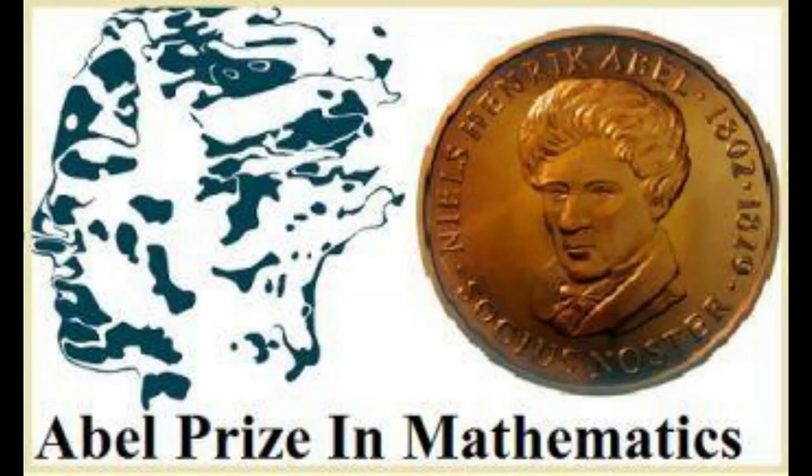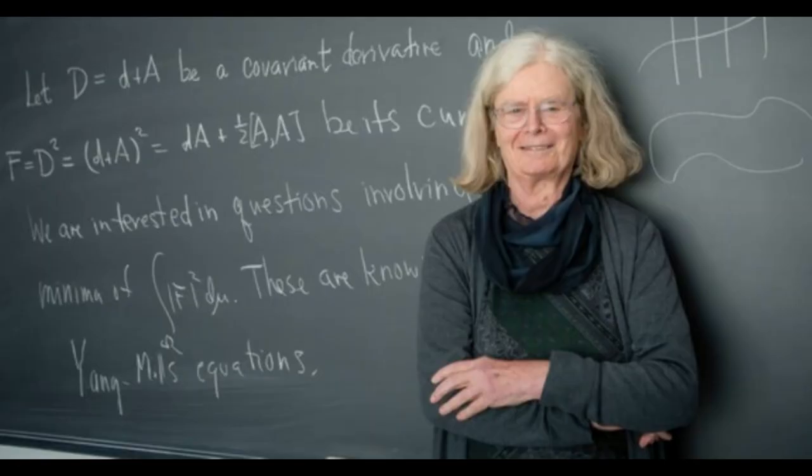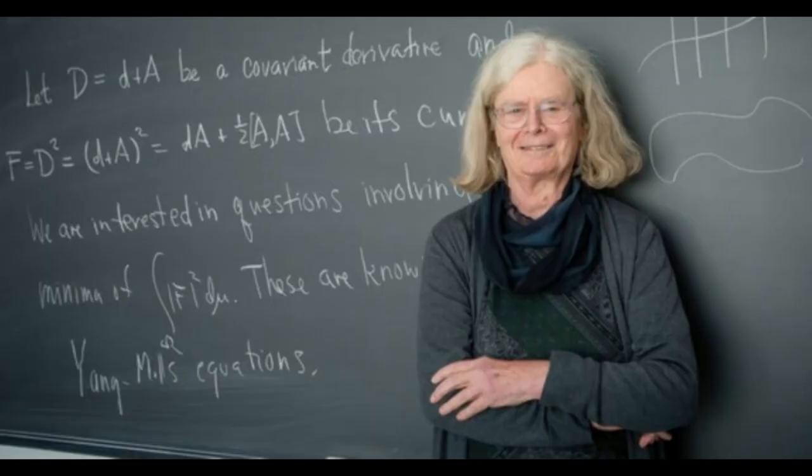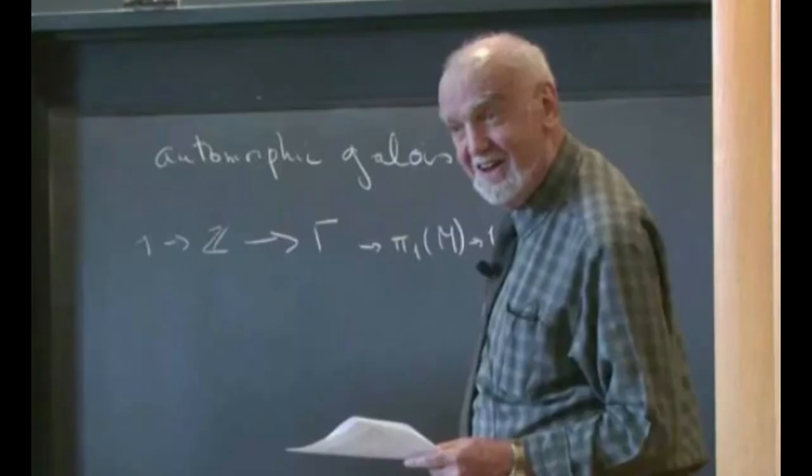In my opinion, the Abel Prize is an equivalent to the Nobel Prize in mathematics. I'll tell you why. The Abel Prize is being awarded by the King of Norway, pretty much like the Nobel Prize. We all know sciences are being awarded by Sweden and the Peace Prize is being awarded by Norway.